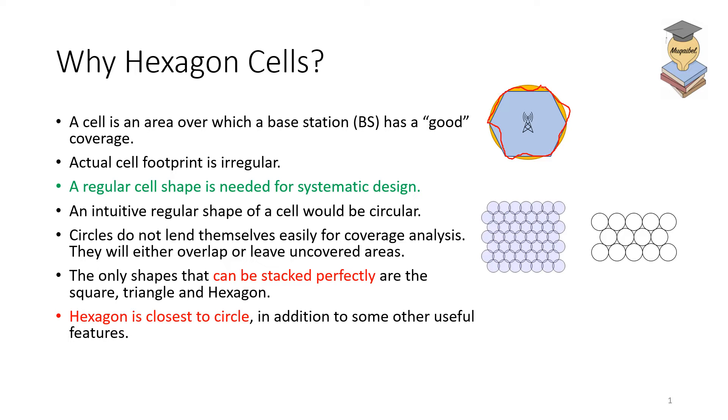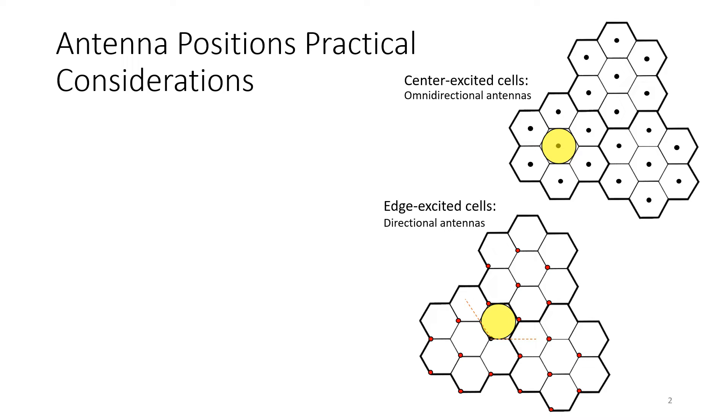We'll learn a few things about the hexagonal cells as we go on. Antenna positioning considerations. Let's say that we agree that we're going to have hexagonal cells to cover the area. There are two options to locate the antenna or to position the antenna, either center excited where the antenna is in the middle. And usually we have three sectors. So if you have 120, 120, 120, three antennas are placed in the center.